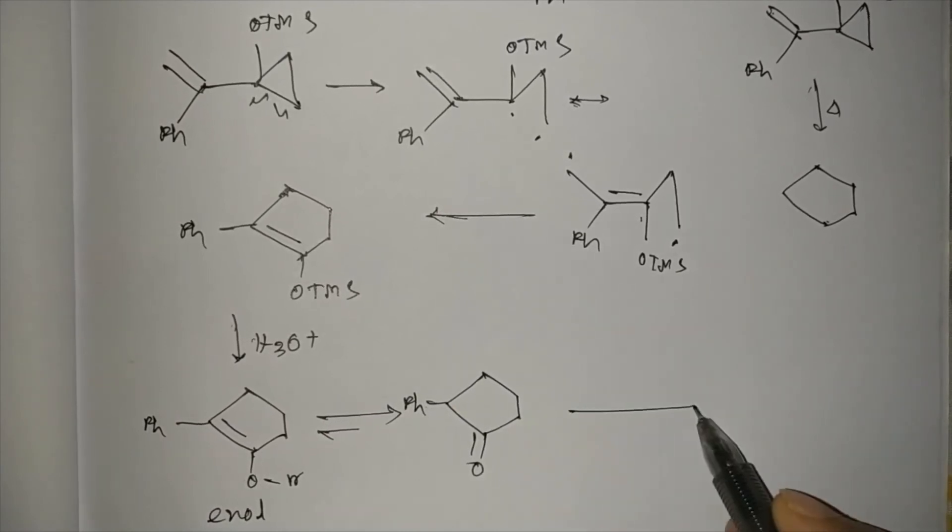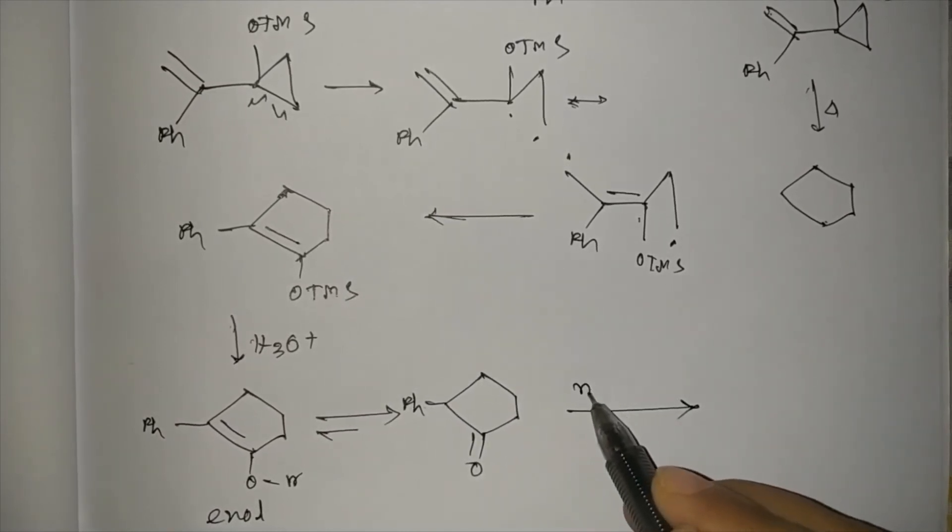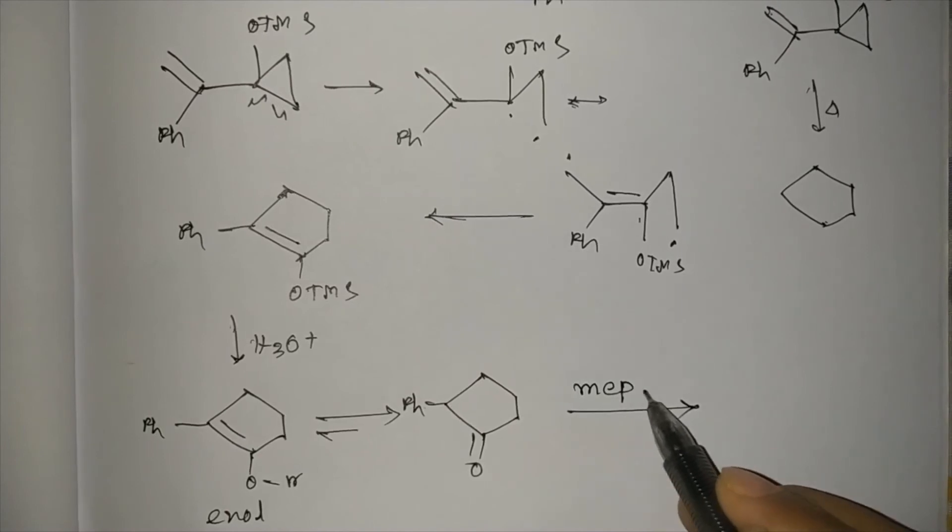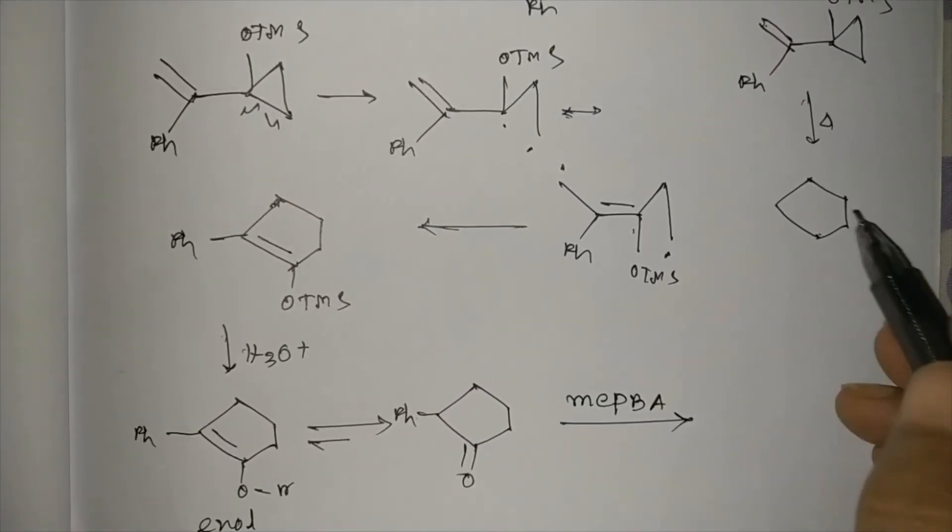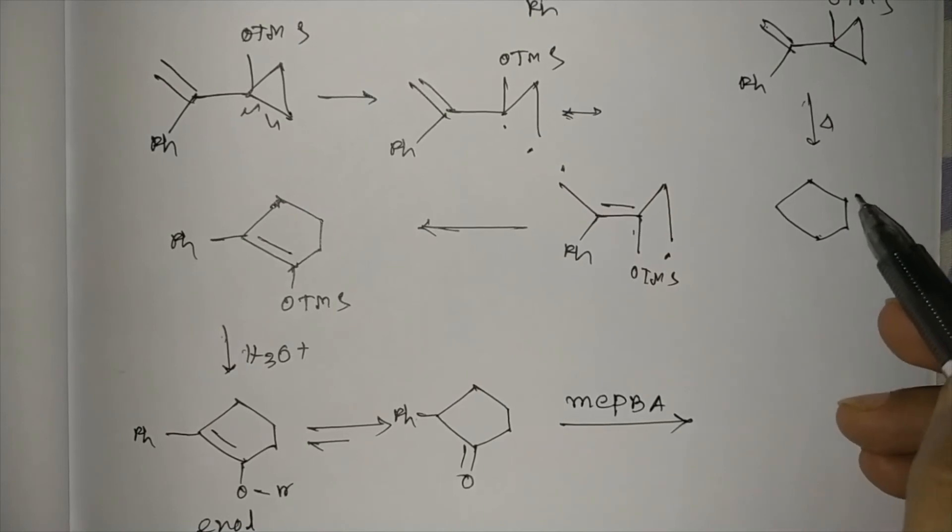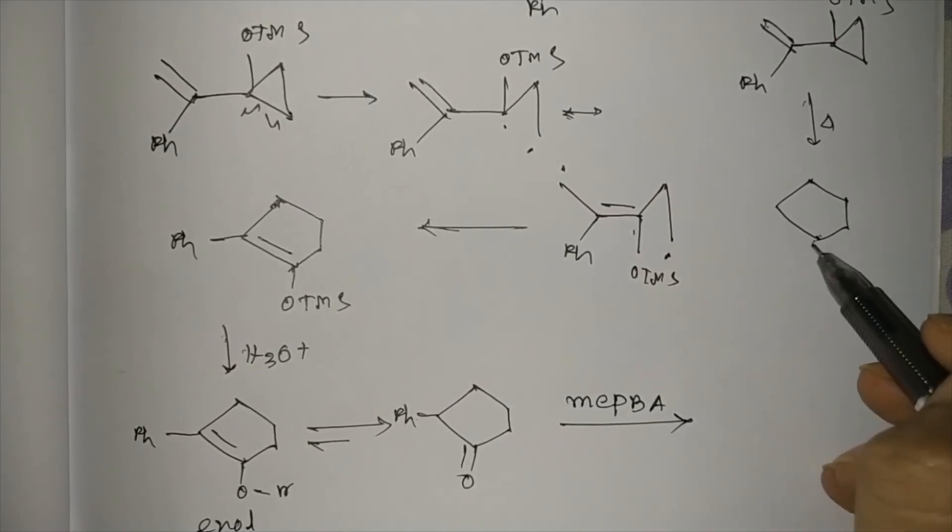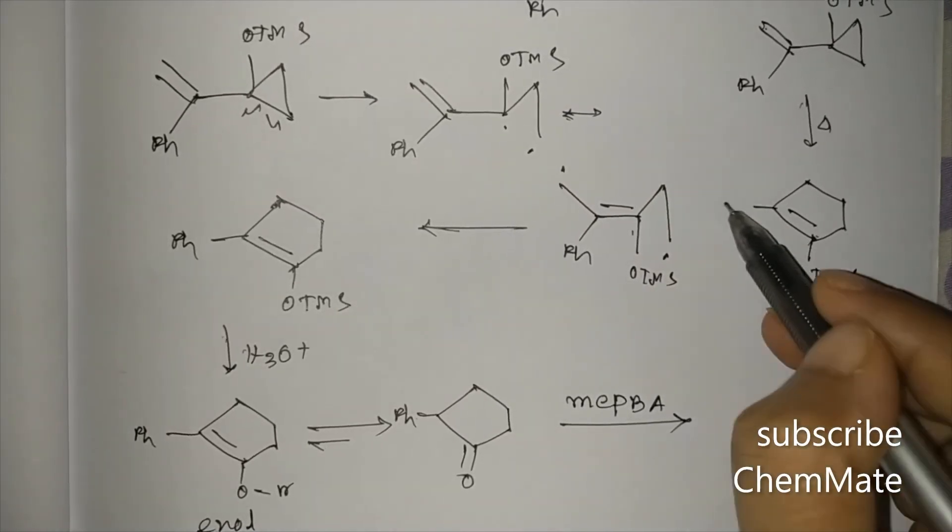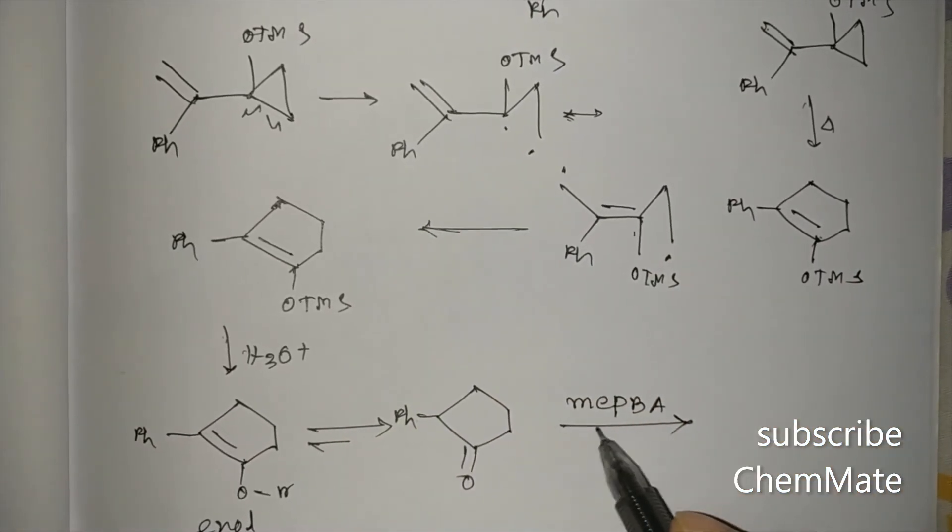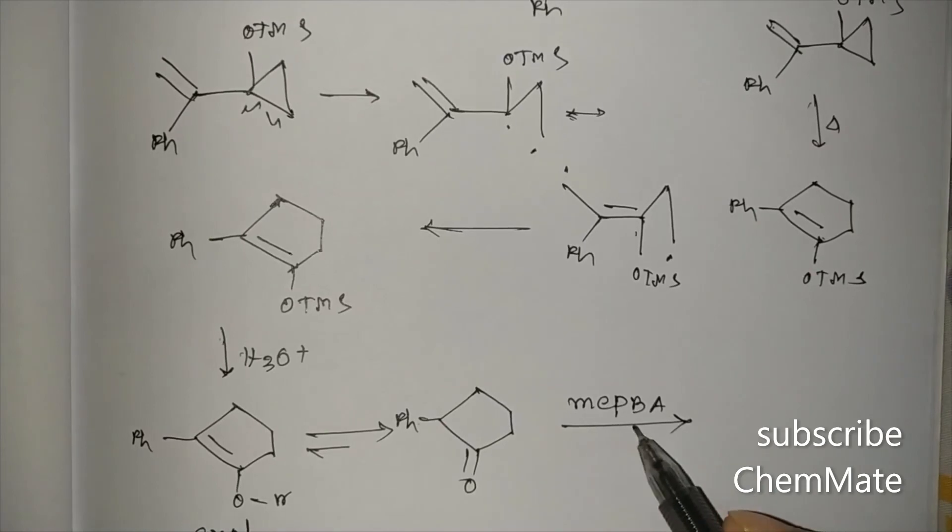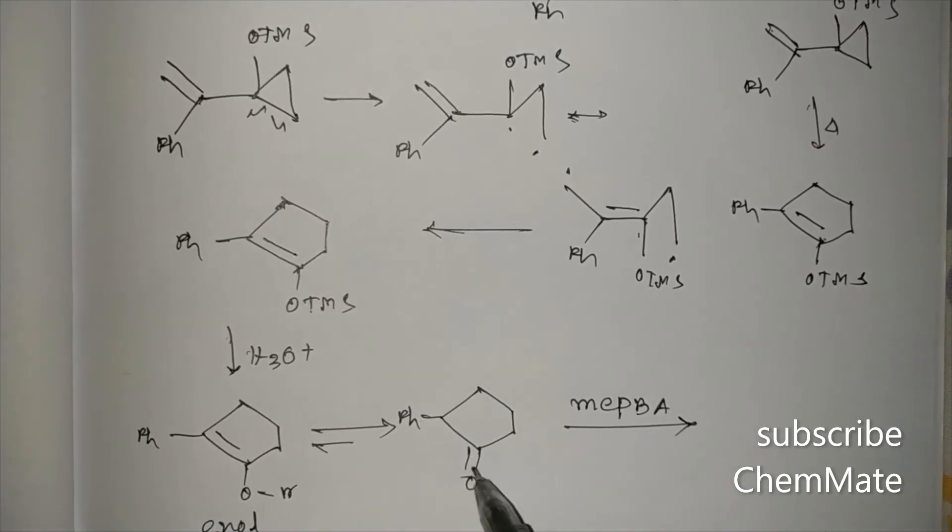And now in another reaction, if it is treated with metachloroperoxybenzoic acid. So here, if it is heated, then our product is TMS, Ph. I'll draw the mechanism here. So it is treated with metachloroperoxybenzoic acid, then an ester will be formed.